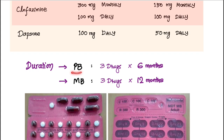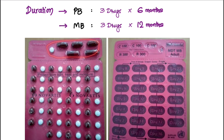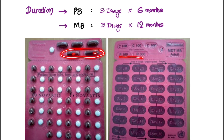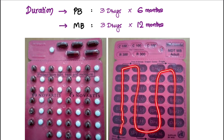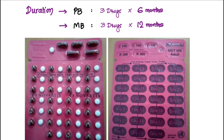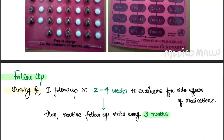The duration of treatment for paucibacillary leprosy is six months for all three drugs, whereas for multibacillary it is 12 months. In the blister pack, day one of the month includes three doses of clofazimine 100 mg (totaling 300 mg), rifampicin 300 plus 300 mg (600 mg total), and dapsone 100 mg. Days two through the end of the month are daily doses, completing one month of treatment.